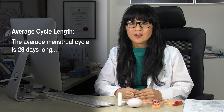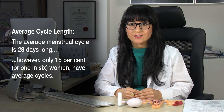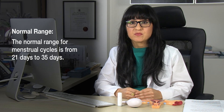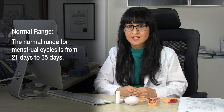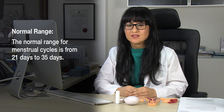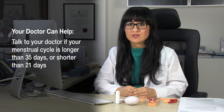Now, typically only about 15% of women have an average 28-day cycle. Many women can have a 21-day cycle or up to a 35-day cycle. If your cycle is shorter than 21 days or longer than 35 days, you should probably be speaking to your doctor. However, if you have a cycle that's anywhere between that range, this is generally what happens during that cycle.